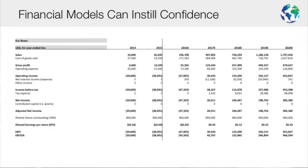Beyond that are your operating expenses, both variable costs and fixed costs, as you need in order to run your company and produce those goods and services. In the end, of course, is your earnings before interest and taxes, and then finally your earnings before interest, depreciation, and amortization and taxes.